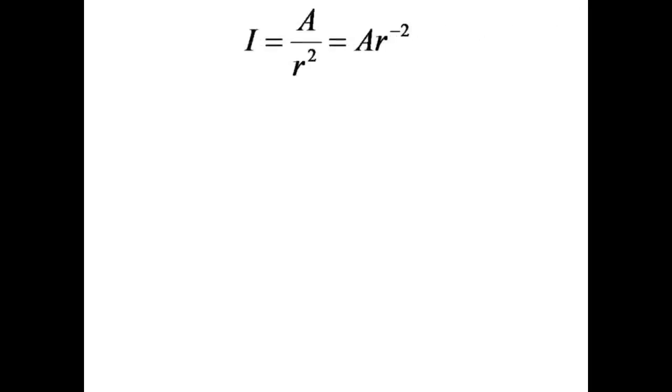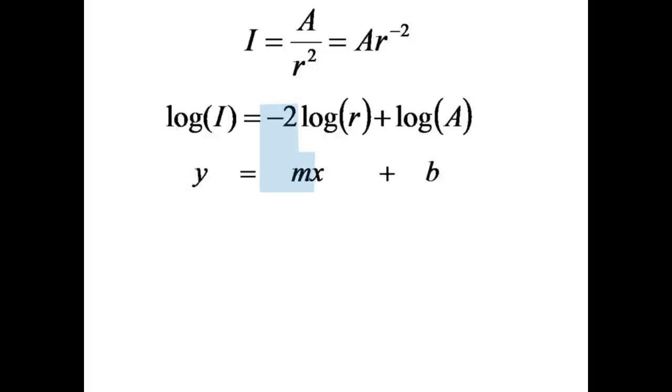Another way to express the inverse square relation is to state that intensity is proportional to distance raised to the negative second power. We take the logarithm of both sides to transfer the minus 2 from the exponent to become a multiplying factor of the log of r. We now find that the log of i is linearly related to the log of r and that the slope of the linear relation is minus 2. Thus, a plot of log i versus log r is expected to yield a straight line with a slope of negative 2.